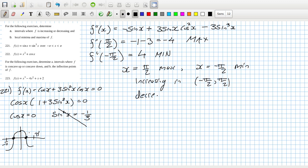And then decreasing from minus pi to minus pi over 2 and pi over 2 to pi. That's 221 done.